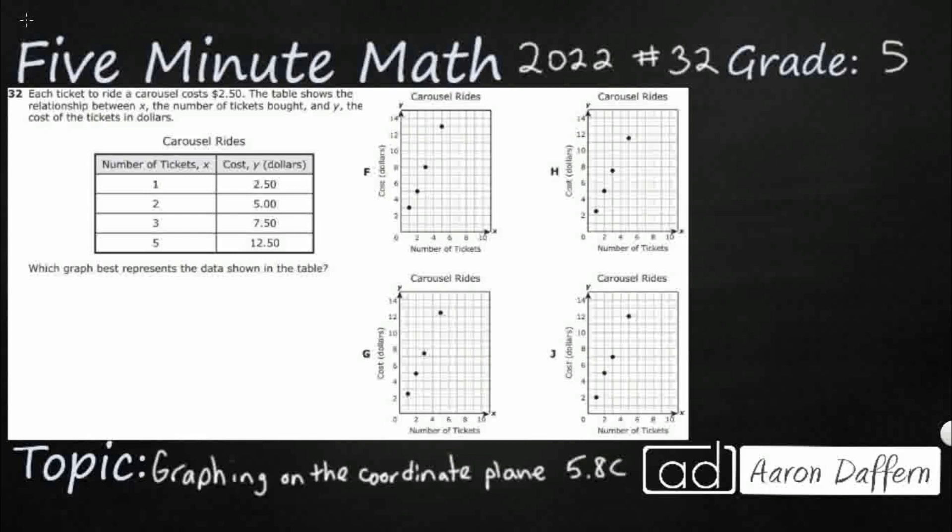Each ticket to ride a carousel costs $2.50, and the table shows this relationship between X and Y, so our X is going to be the number of tickets. Notice we do kind of skip here a little bit. It's 1, 2, 3, 5, so we're jumping over that 4, and then we've already got our Y set out for us, $2.50, $5, $7.50, and then $12.50. So there's that pattern right there. In case we were looking for it, not that we need it, but it's going to be $2.50 per ticket. We're just going to multiply the X, the number of tickets, by $2.50 to get your Y, the dollars.